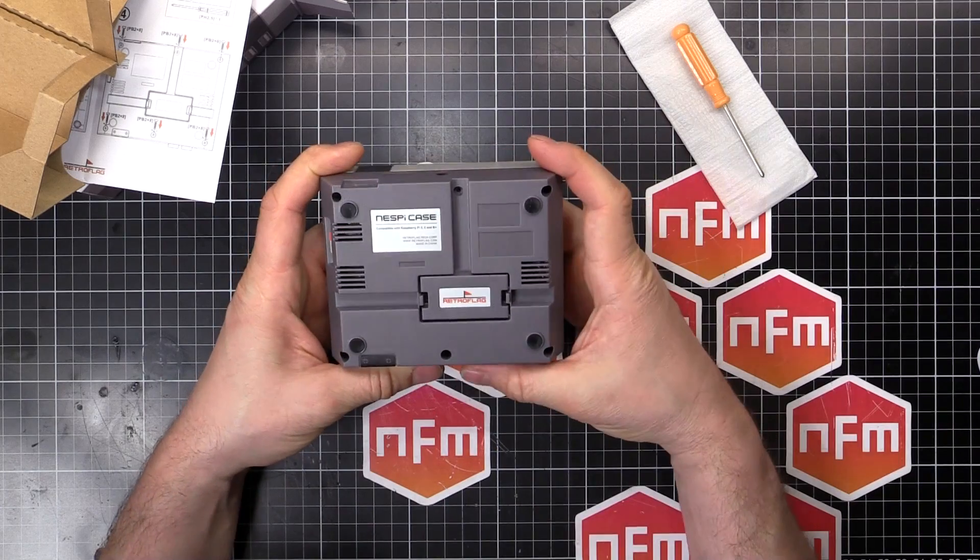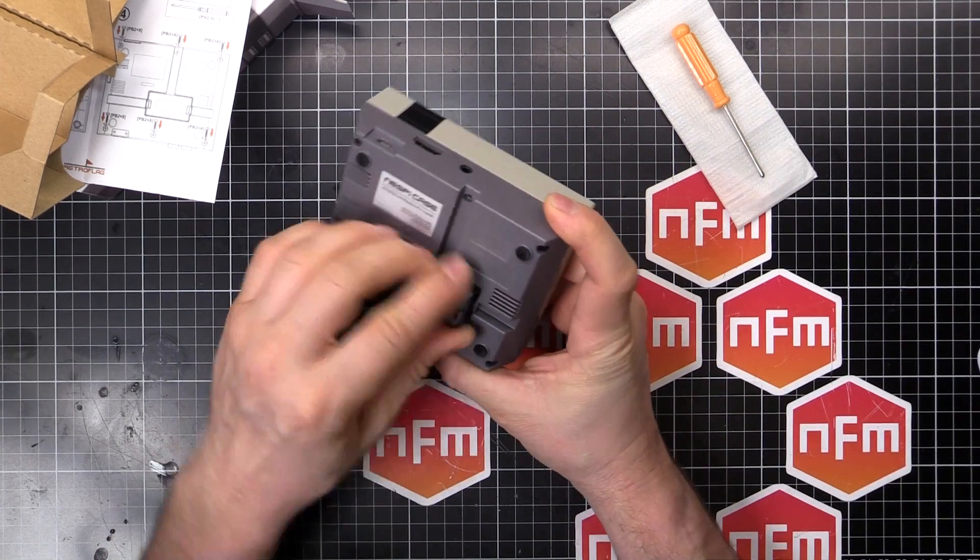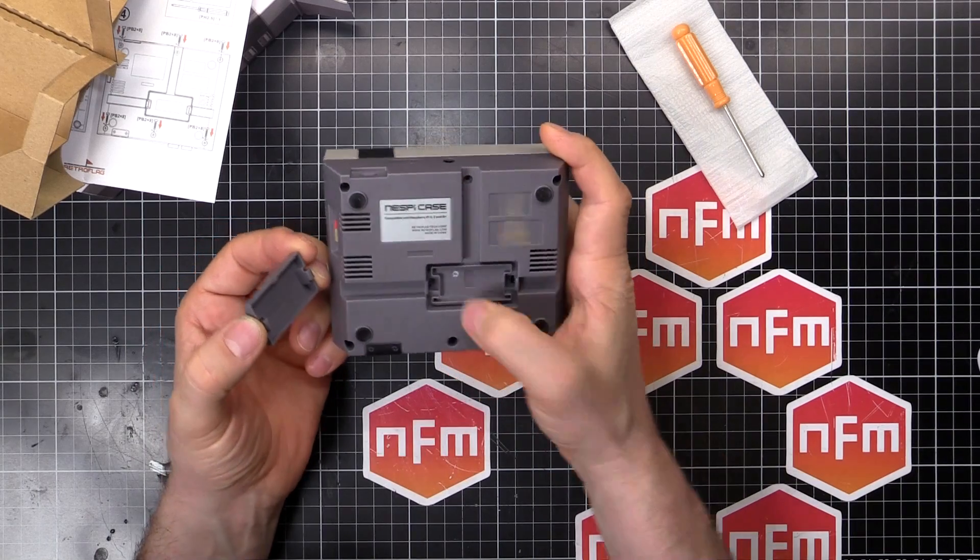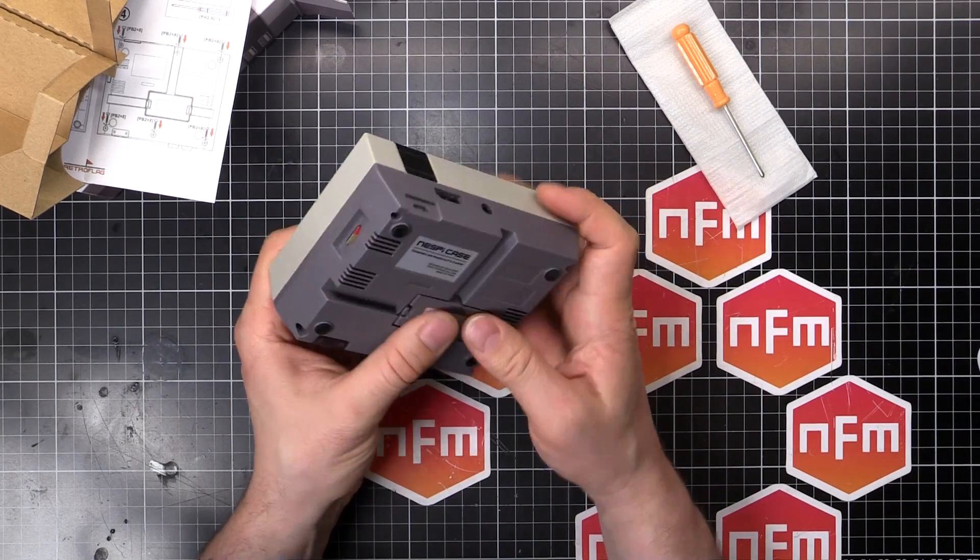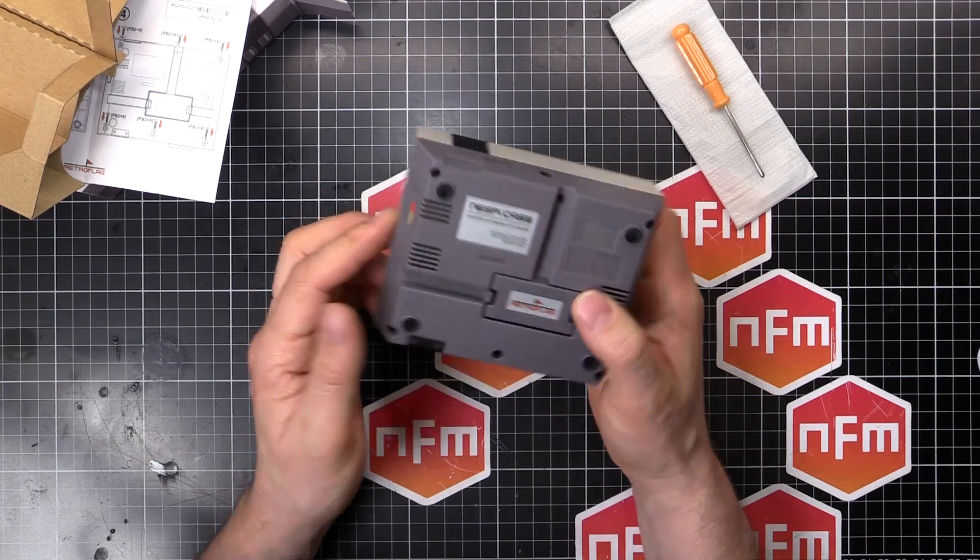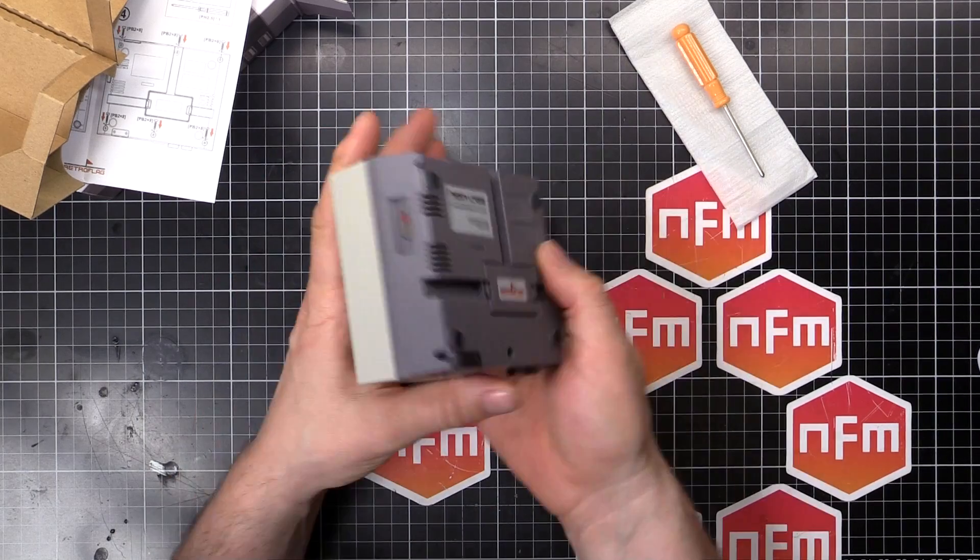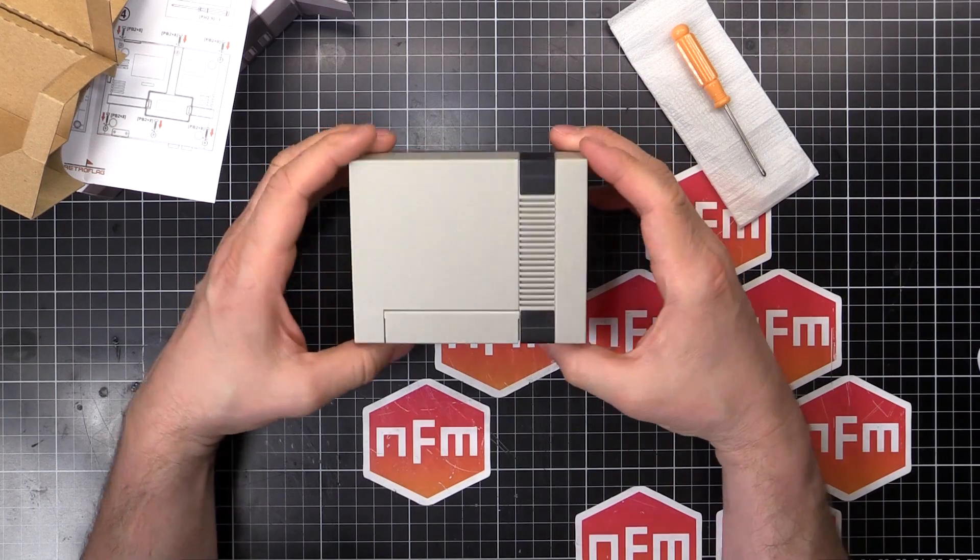Underneath, we've got some vents, which is nice. And we've got this little thing here, which if we open it up, it is micro SD storage. So you can put some spare micro SD cards in there and keep them safe. So you can run a few different images or whatever you want to do there. And then screw holes, rubber feet, all that sort of good stuff. And it looks actually quite smart. I really do like the design.